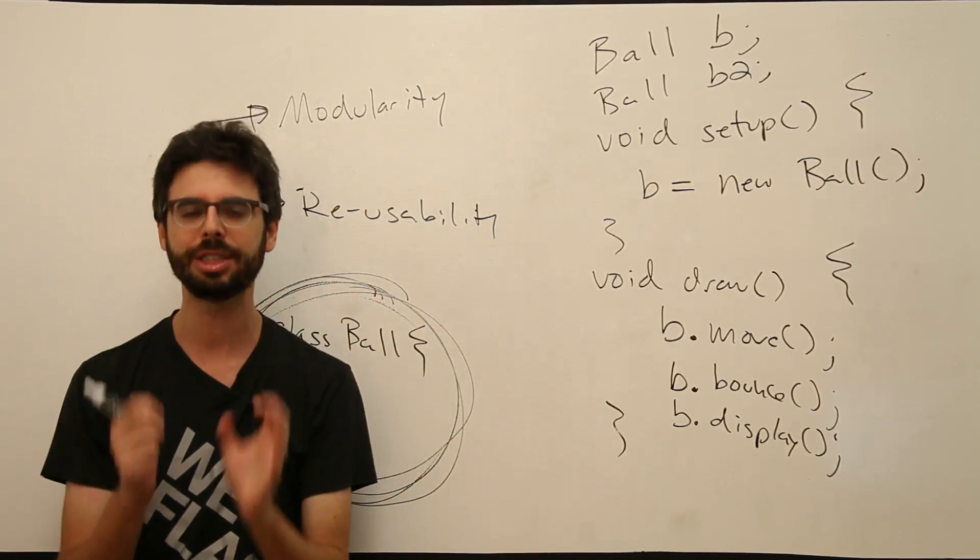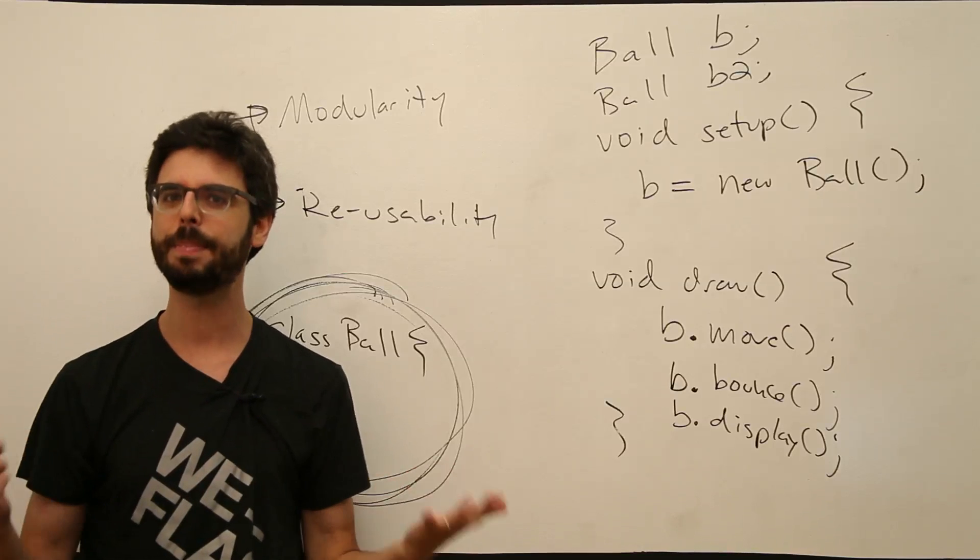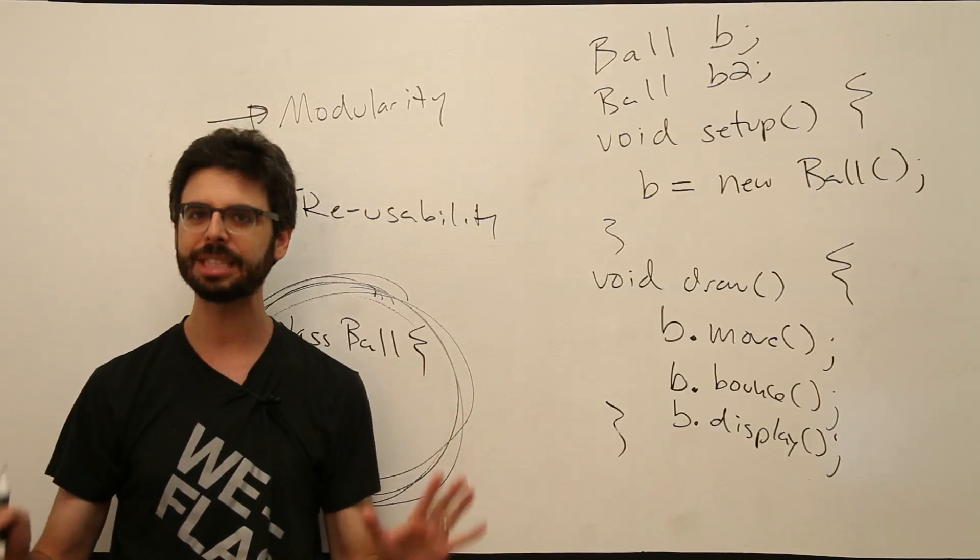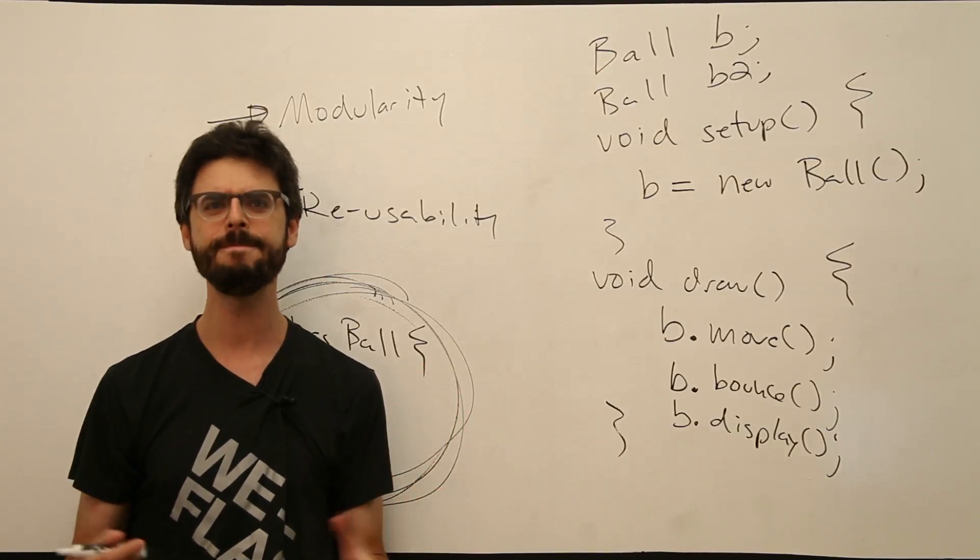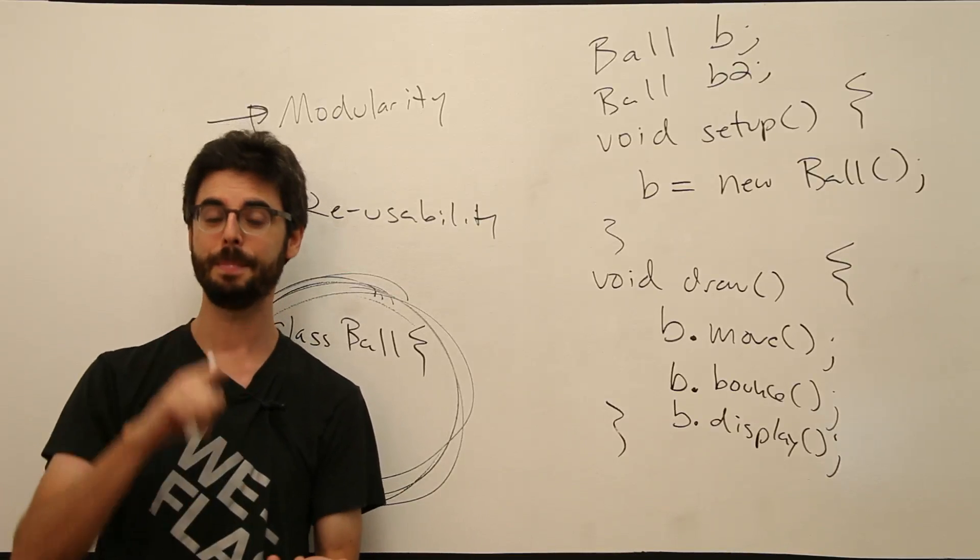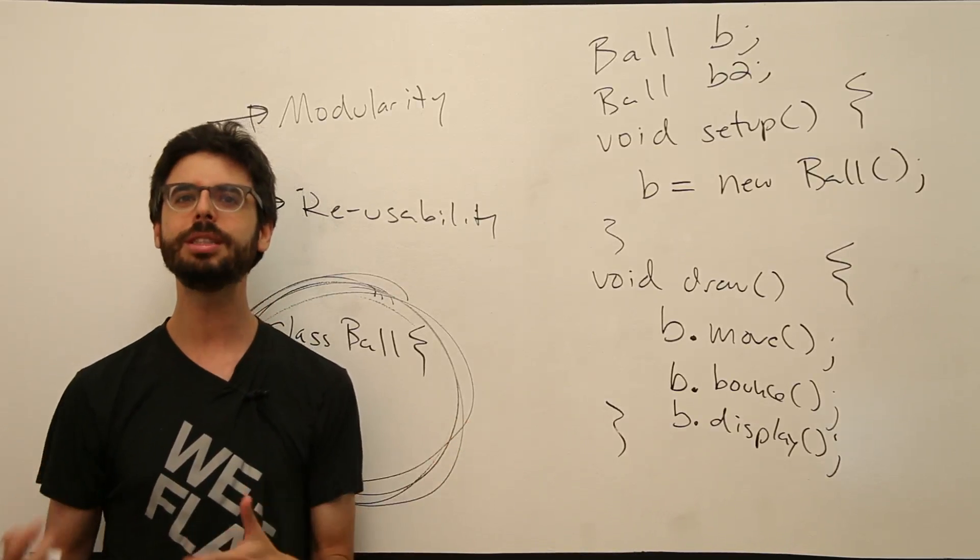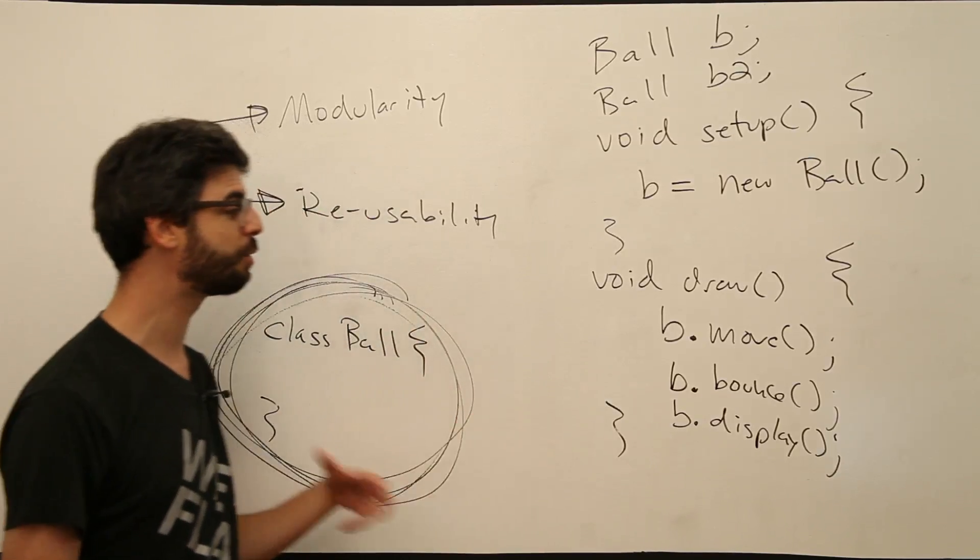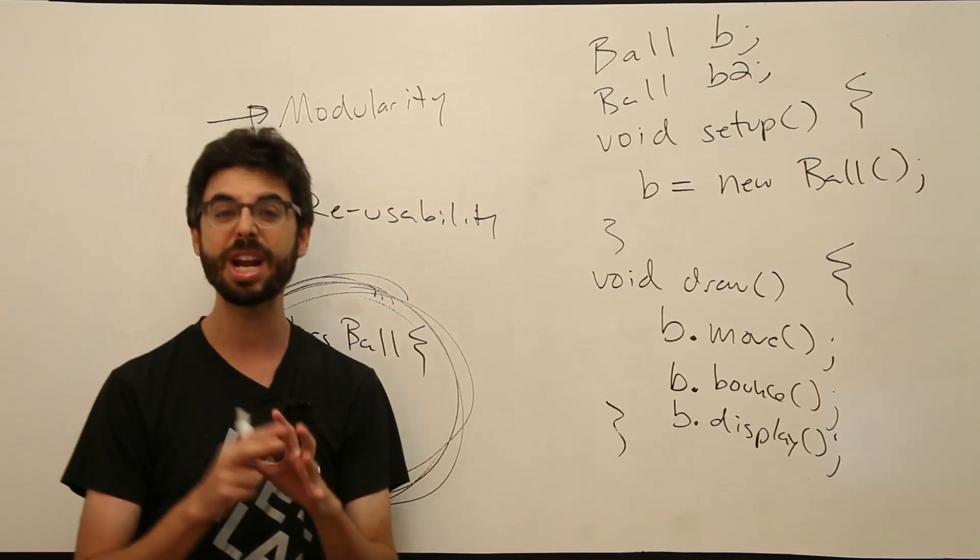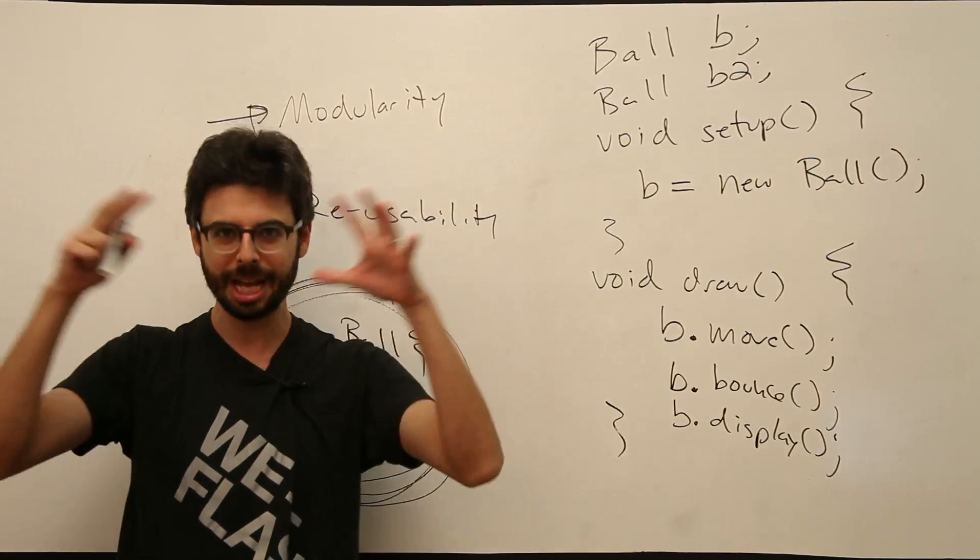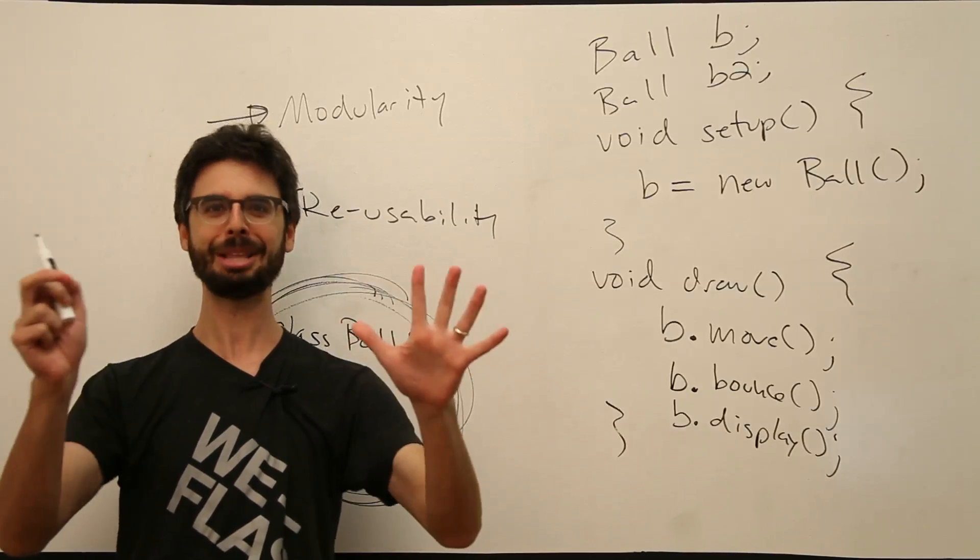what we need to understand first is a little bit about writing our own functions. The next video is going to start with saying, what does it mean to call a function in processing? We're doing this all the time. Line, rect, background, fill, etc. What does it mean to write our own functions? So that's where we're going to start. Once we get through functions and learning how to break our program up into separate functions, then we'll start to build, put those functions together and wrap them into an object. And that's where we're going.